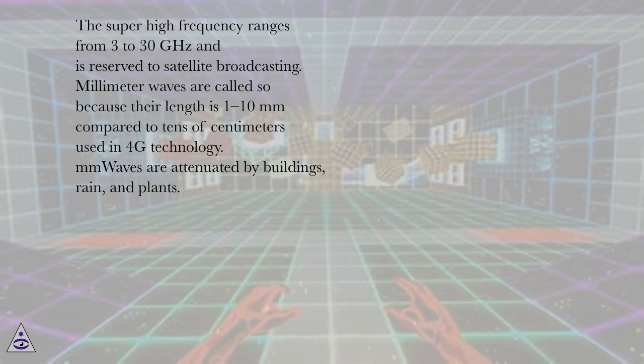The super high frequency ranges from 3 to 30 gigahertz and is reserved for satellite broadcasting. Millimeter waves are called so because their length is 1 to 10 millimeters compared to tens of centimeters used in 4G technology. mmWaves are attenuated by buildings, rain, and plants.